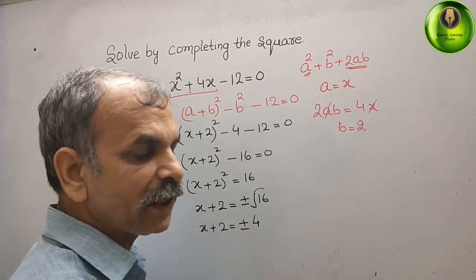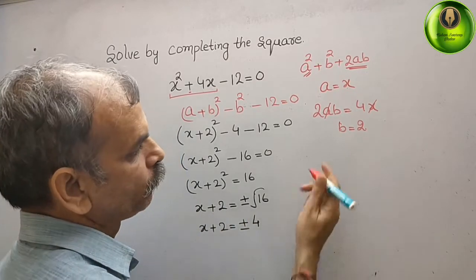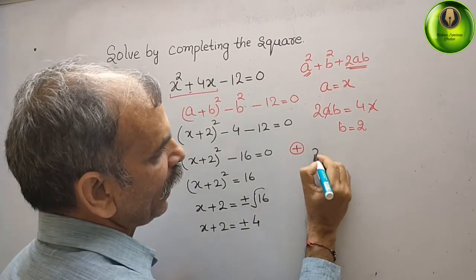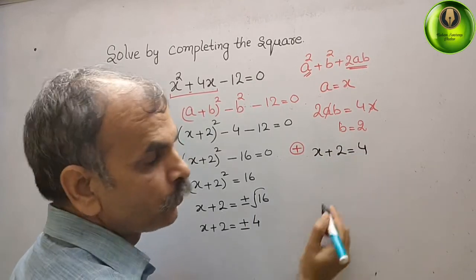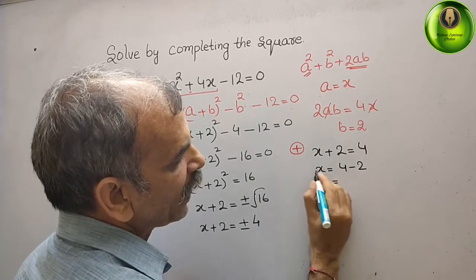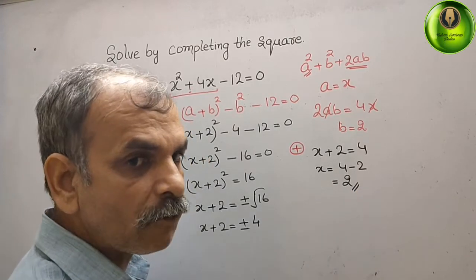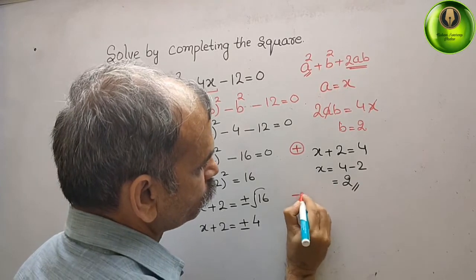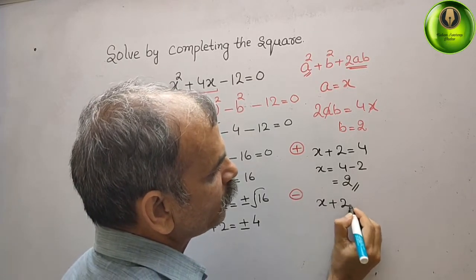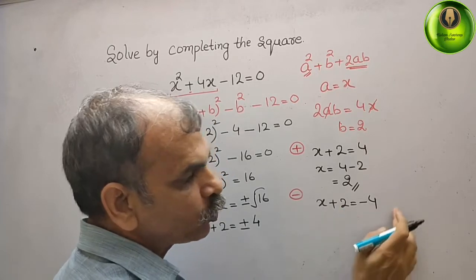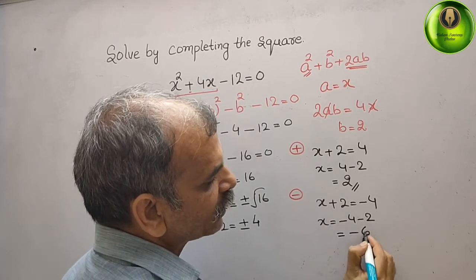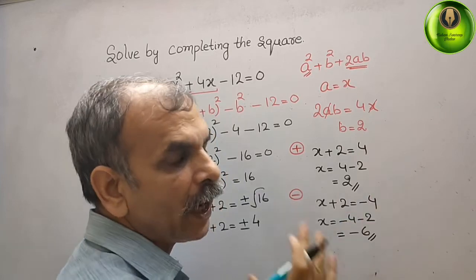There are two cases: plus and minus. First case, taking the positive: x plus 2 equals 4, so x equals 4 minus 2, which gives x equals 2. Second case, taking the negative: x plus 2 equals minus 4, so x equals minus 4 minus 2, which gives x equals minus 6. So minus 6 and 2 are the two solutions.